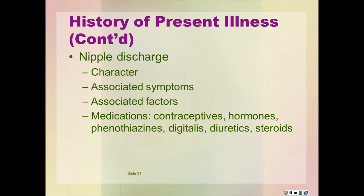Any associated symptoms such as nipple discharge or retraction? Let the OLD CARTS acronym guide your questions: when did it start? Does it occur in one or both nipples? Is the discharge spontaneous or provoked? Is the onset gradual or sudden? What is the duration, color, consistency, odor, and amount of the discharge? Is the discharge related to menses or any other activity? Was there a recent injury to the breast? Are there any tender lymph nodes? What medications is the patient on?